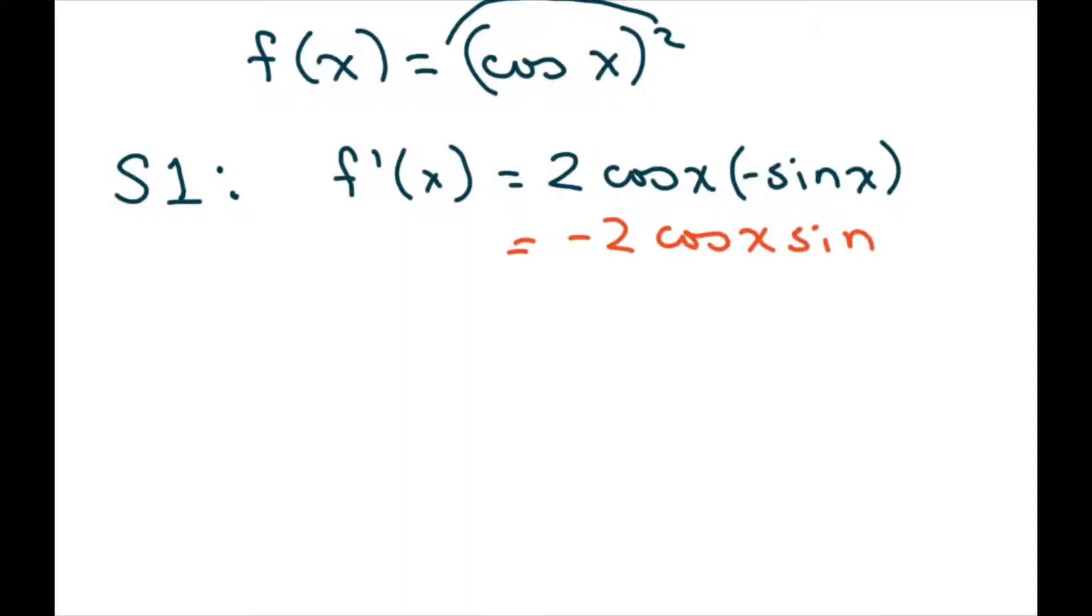Okay, so the second derivative that we're going to do requires, this is step 2, requires the product rule. So we take the second derivative, and you're going to get negative 2 times cosine x cosine x minus sine x and then sine x.